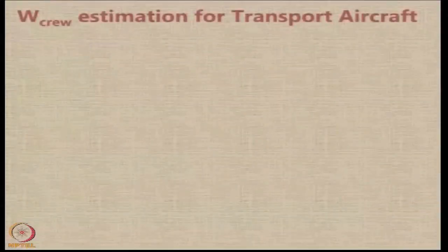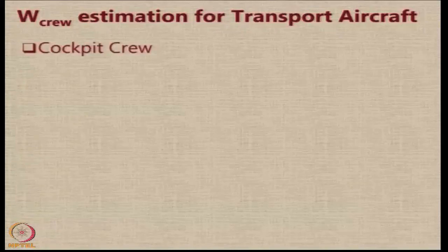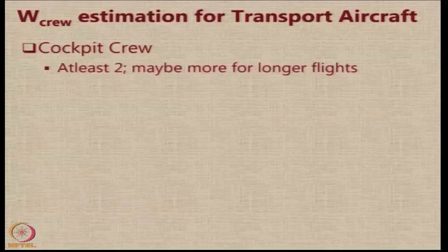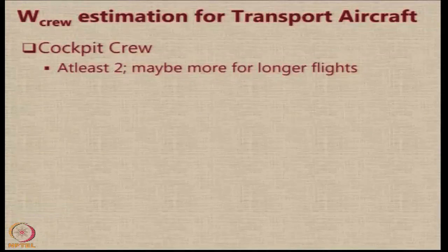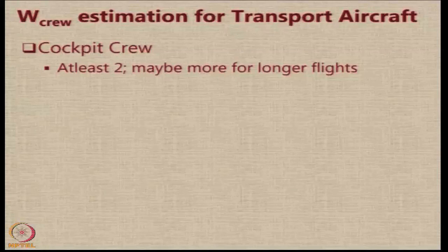Let us first try to tackle W crew. W crew estimation for transport aircraft is a very straightforward process based on information relevant to the operation scenario. The crew of a transport aircraft consists of two distinct groups: cockpit crew, which generally consists of a pilot and co-pilot — also called captain and first officer. From regulatory requirements, aircraft with more than 9 seats carrying fare-paying passengers are required to have a minimum of 2 people in the cockpit.